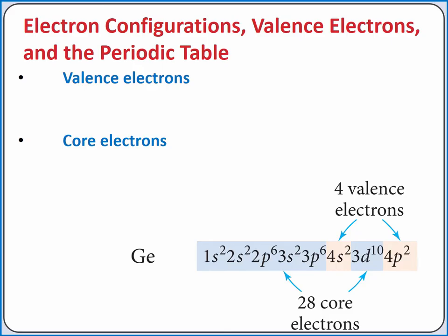n equals 4 is the highest shell, so the two electrons in the 4s and two electrons in the 4p subshells are all valence electrons. Since the 3d subshell is fully filled, those electrons are considered core electrons,